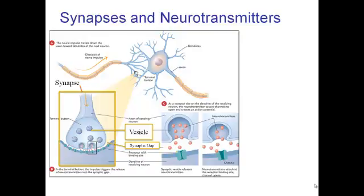Here's the synaptic gap — that space between the terminal button and the receiving neuron. It's the chemicals that fill that gap. These little pink dots represent neurotransmitters, which are the chemical messengers.